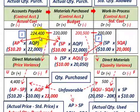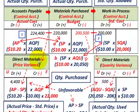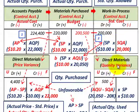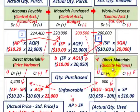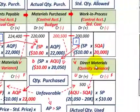One variance is based on the difference in price — the direct materials pricing variance. The other is based on the difference in quantities — the direct materials quantity variance.